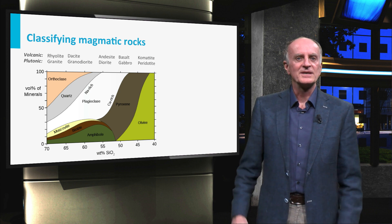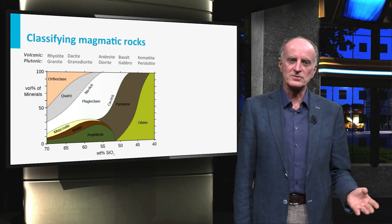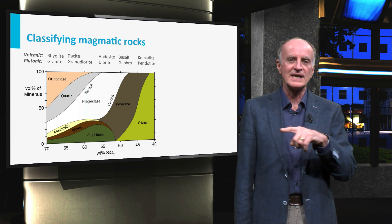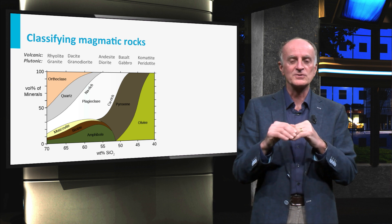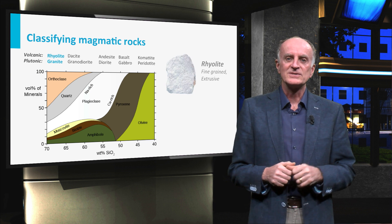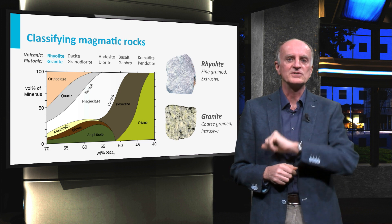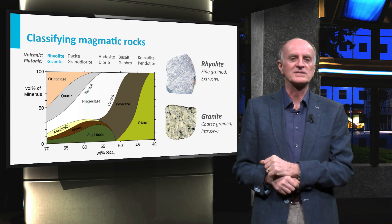In this last slide, you find a scheme for the classification of magmatic rocks. In a plot showing the percentage of silica SiO2 versus various types of minerals, you can see that different domains correspond to different types of rocks. And as you can see, two different names exist for each composition, one for intrusive and one for extrusive rocks.